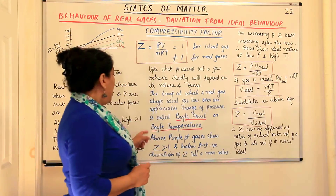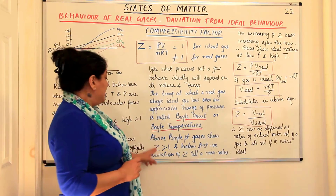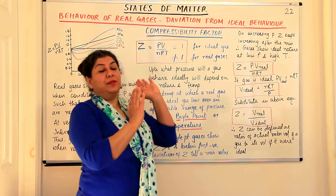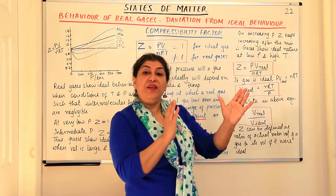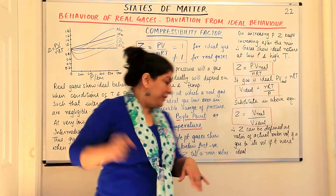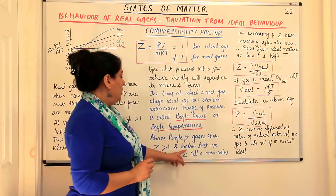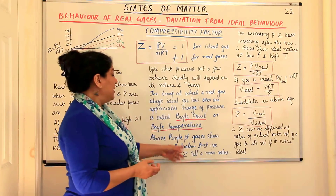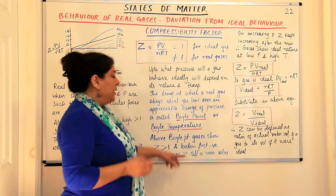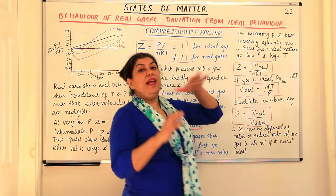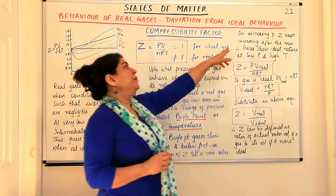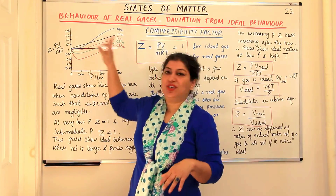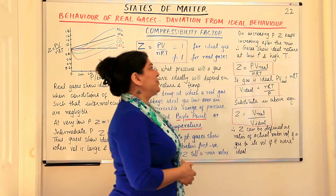To summarize: above the Boyle point, gases show Z greater than 1 and positive deviation. Below the Boyle point, gases first show negative deviation of Z until it reaches a minimum value, and then on increasing pressure, Z keeps increasing continuously from that minimum.